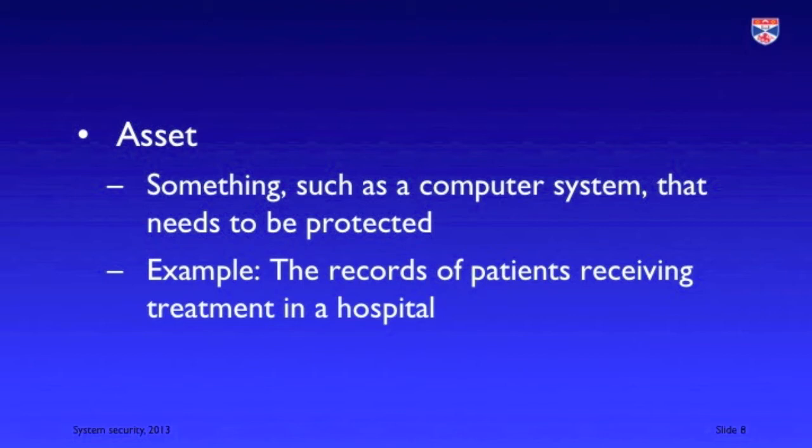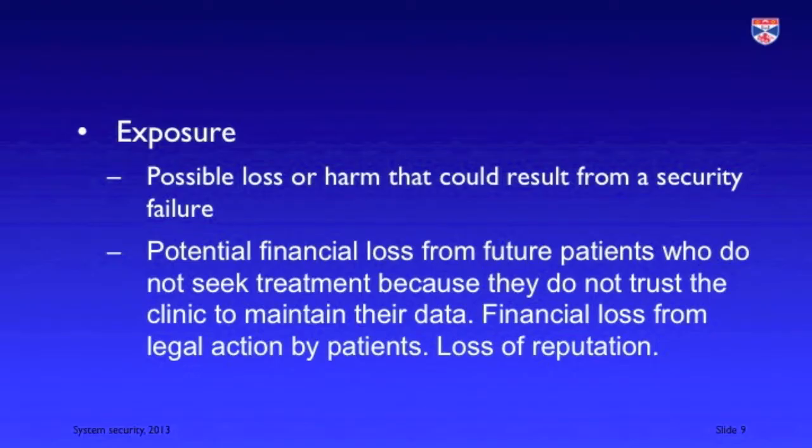As with the other dependability properties, there is some specialist terminology used when people are talking about security. An asset is something that has to be protected, such as a computer system or its data. An example would be the medical records of people receiving treatment in a hospital. Exposure is the possible loss or harm that can result from a security failure. The exposure might be a loss of reputation for the hospital, a loss of business as patients refuse to go there, or costs of legal action as patients seek redress for the hospital losing their information.